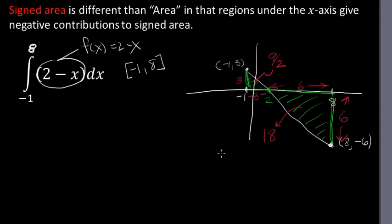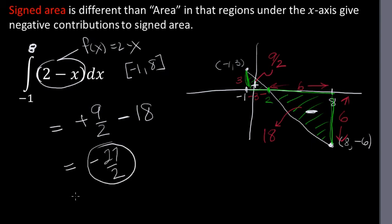So we have an area of 9 halves and an area of 18. But what we have to do now is remember that this region gives us a positive contribution, this will give us a negative contribution. So our signed area is plus 9 halves minus 18. Positive 9 halves minus 18, so that would be 9 halves minus 36 halves, which was negative 27 halves.